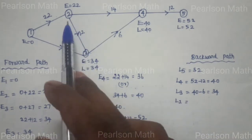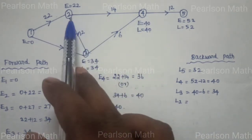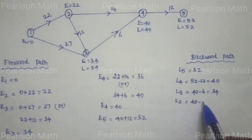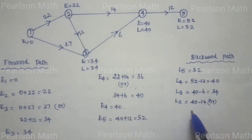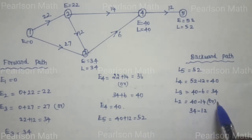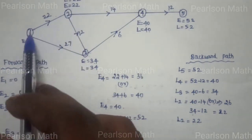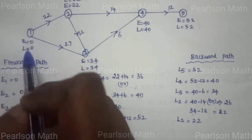Now for the backward path, L2: we have two possibilities, 4 to 2 and 3 to 2. First 4 to 2: 40 minus 14 equals 26. Next 3 to 2: 34 minus 12 equals 22. The smallest number is 22, so L2 equals 22. Then L1: 22 minus 22 equals 0, so L1 equals 0.